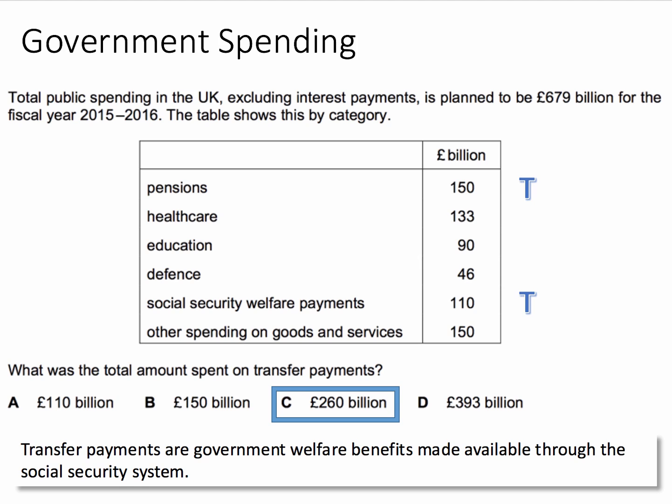Healthcare, education, and defence are current and capital spending on publicly provided goods and services. So adding pensions and welfare together, we get £260 billion. The answer to this question is C.